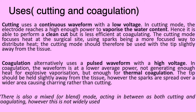Surgical diathermy is used for cutting and coagulation. Cutting uses a continuous waveform with low voltage. In cutting mode, the electrode reaches a high enough power to vaporize the water content, allowing a clean cut, but is less efficient at coagulating. The cutting mode focuses heat at the surgical site using sparks — a more focused way to distribute heat. The tip should be held slightly away from the tissue.